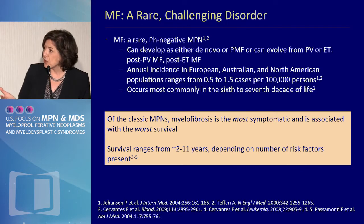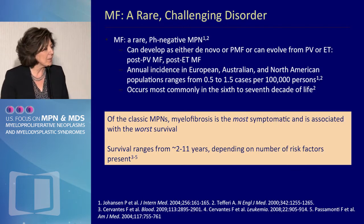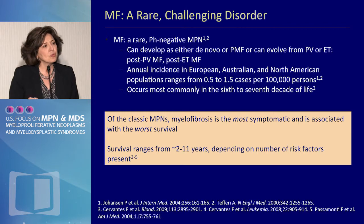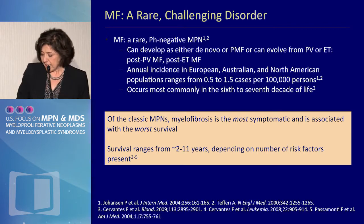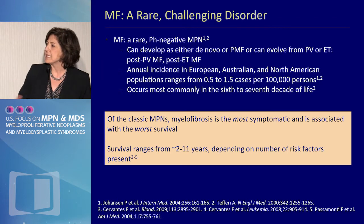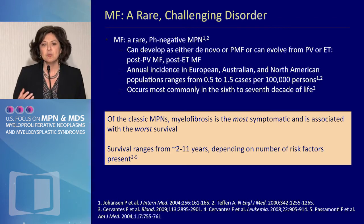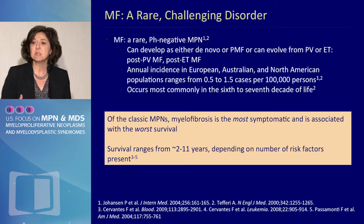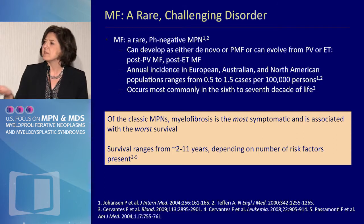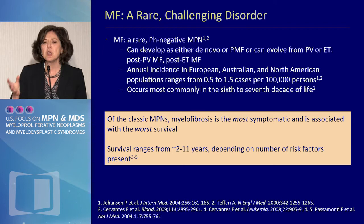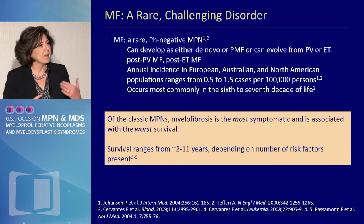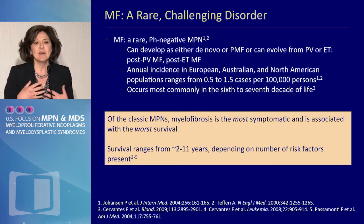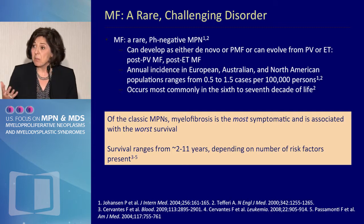Myelofibrosis is the rarest of all myeloproliferative neoplasms. It's not very common, but it is the one associated with the word survival. There have been a variety of prognostic systems developed to understand survival and leukemia evolution, starting with the IPSS, which is very good for assessment at the time of diagnosis, moving on to the DIPSS and the DIPSS plus, which are dynamic and can be applied at any given point in time.